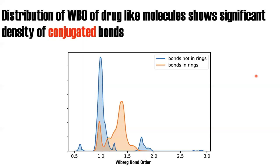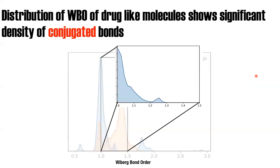The bonds we are concerned about are those with Wiberg bond orders falling between 1 and 1.5 — there is some density there, and these are the bonds we're going to be focusing on.